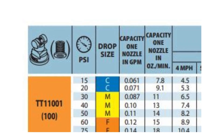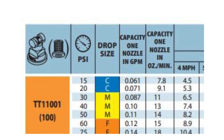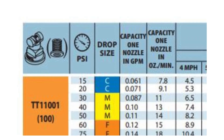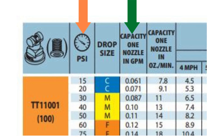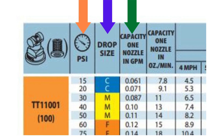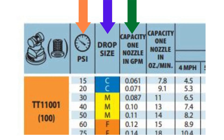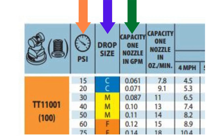Every manufacturer of sprayer nozzles will provide a chart for each type of nozzle they offer. This chart is where you will find the nozzle capacity at different pressures as well as the droplet sizes they produce.